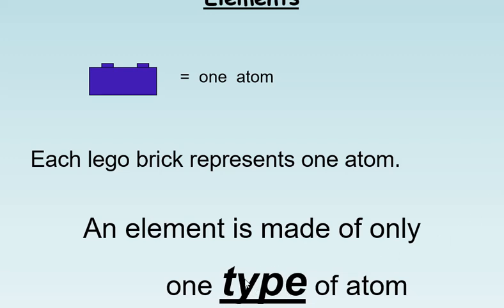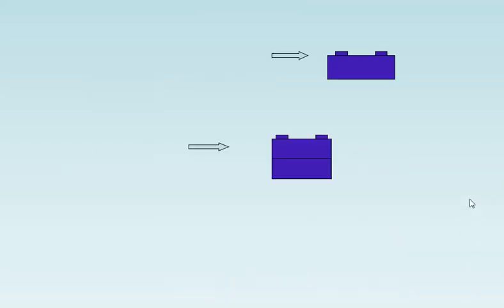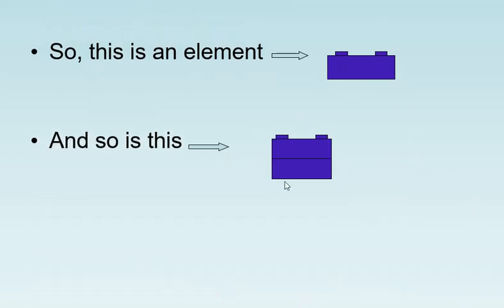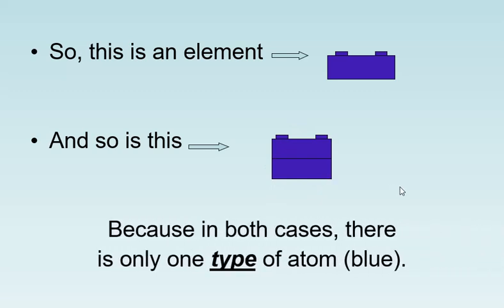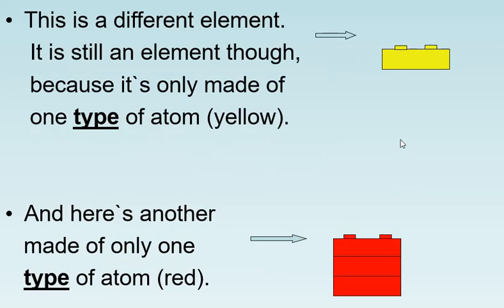This word here is absolutely crucial: one type of atom. So this is an element, and so is this, because in both cases there is only one type of atom, the blue type. This is a different element, but it is still an element because it's only made of one type of atom, the yellow. And here's another element, again it's only made of one type of atom, red.